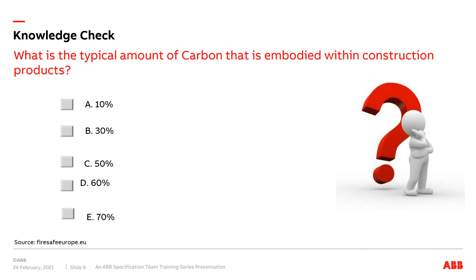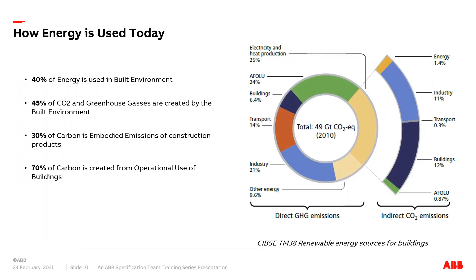Second question: what is the typical amount of carbon that is embodied within a construction product? It's in fact 30% of carbon is embodied within construction products. This is taken from CIBSE TM38, Renewable Energy Sources for Buildings. It demonstrates that 40% of all energy is used within the built environment, and 45% of CO2 and greenhouse gases. When most people talk about zero carbon, that includes greenhouse gases — not only CO2, but also SF6 and other refrigerants. 30% of this carbon is embodied emissions in construction products, and 70% of carbon is created from the operational use of a building.